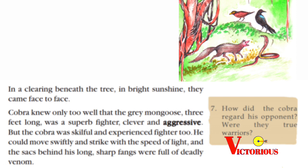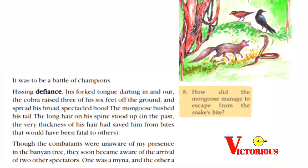Again there is a question on the right side — the seventh one: how did the cobra regard his opponent? Were there two warriors? The cobra knew that the mongoose was a superb fighter, clever and aggressive. They were true warriors since the cobra was also a skillful and experienced fighter.